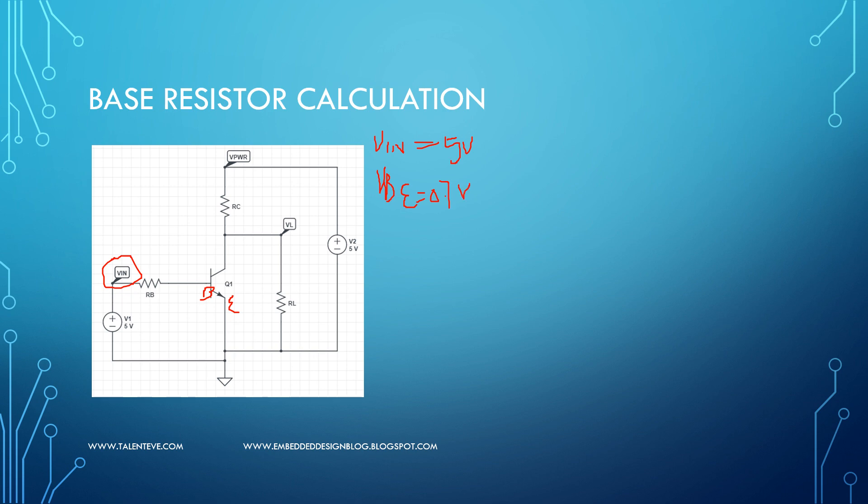So we know generally VBE shall be 0.71 volt, right, or 0.6 volt based on your NPN transistor data sheet. So similar to how we applied the voltage here should always be greater than or equal to the voltage across this resistor and then VBE. Let us assume this current is nothing but IB.